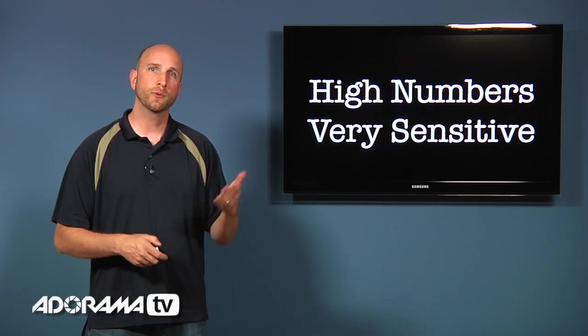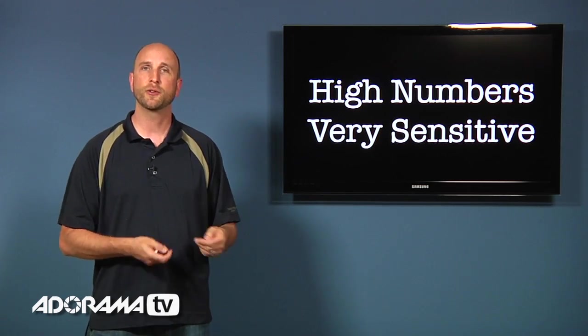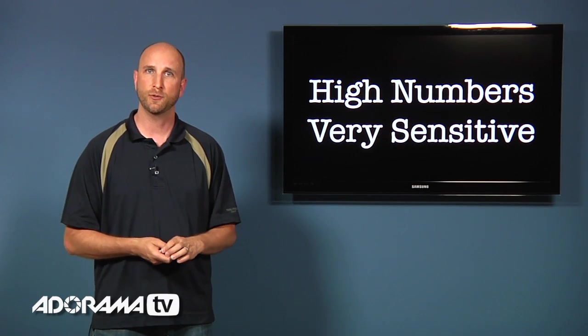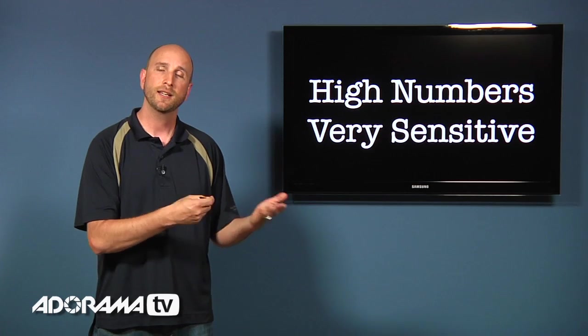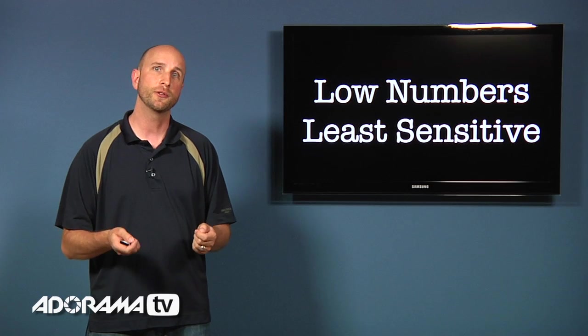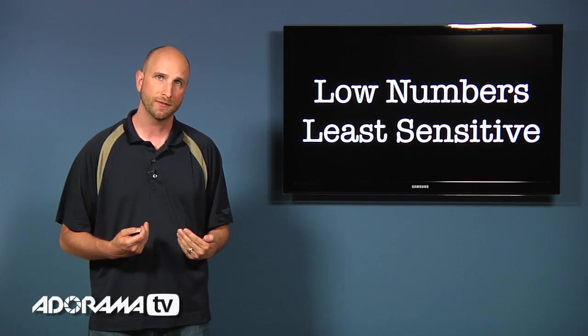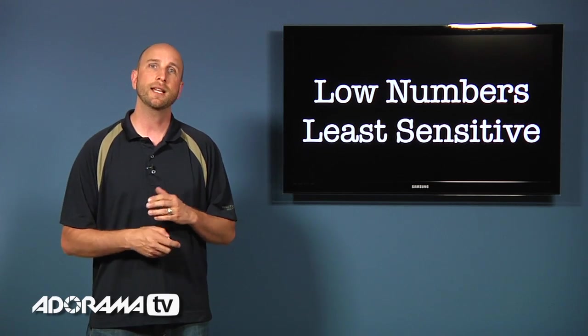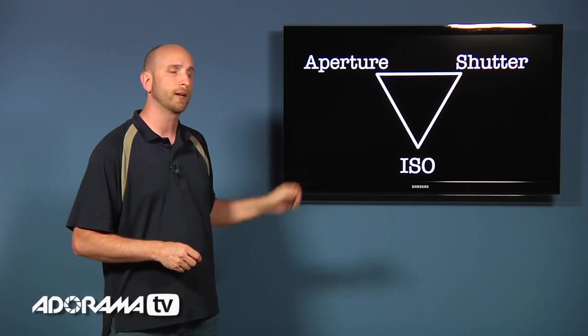So ISO numbers that are really high like ISO 1600 or 3200 allows our sensor to shoot in low light situations. Just like our eyes could see in a dark theater. And ISO numbers that are very low like ISO 100 or 200 allow our camera to be less sensitive to light. So we can shoot in bright sunny days.